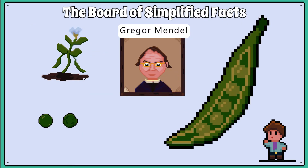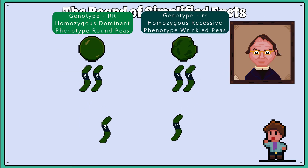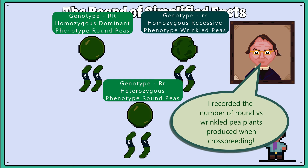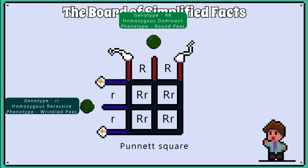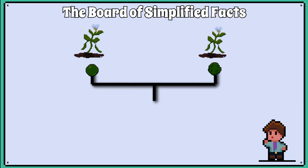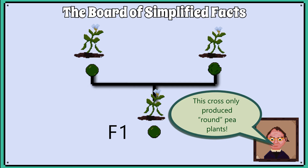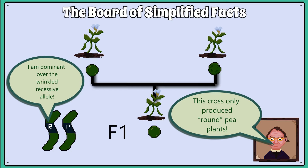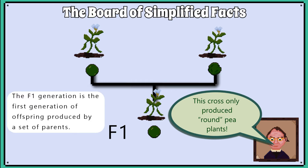Gregor Mendel did many experiments with pea plants, and started to show how genes are passed on, and how the ratio of phenotypes produced in the offspring can tell us what the genotype of the parents were. We are going to use Punnett squares and start breeding some sweet pea plants. There is a gene that controls whether the peas come out round or wrinkled. If we cross-breed a round pea plant with a wrinkled pea plant, and all the offspring have round peas, we can say that the round pea allele is dominant over the wrinkled recessive allele. This first generation of offspring is labelled as F1.